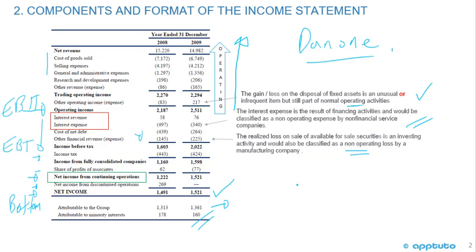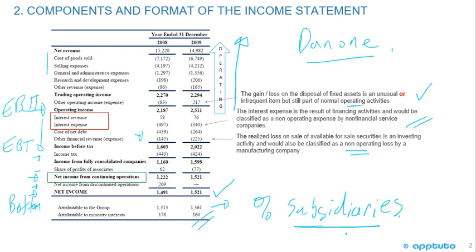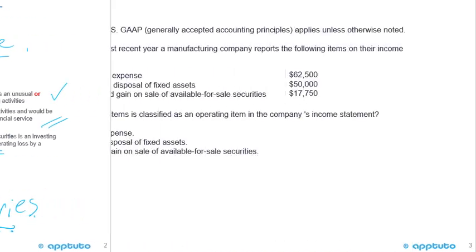Attributable to the group was $13.61 because we had this item attributable to minority interest. When we consolidate financial statements of subsidiaries, even where we don't own 100%, we consolidate all the revenues and all the expenses and get to net income. We have what's attributable to the group, and attributable to minority interest is the percentage of subsidiaries where we don't own 100%.